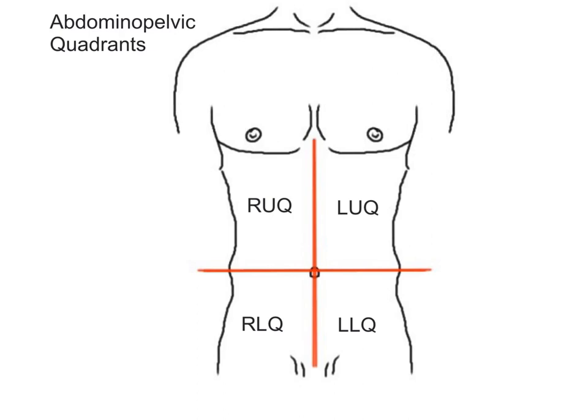The names of the four quadrants are: the right upper quadrant, commonly abbreviated RUQ; the left upper quadrant, abbreviated LUQ; the right lower quadrant, abbreviated RLQ; and the left lower quadrant, abbreviated LLQ.